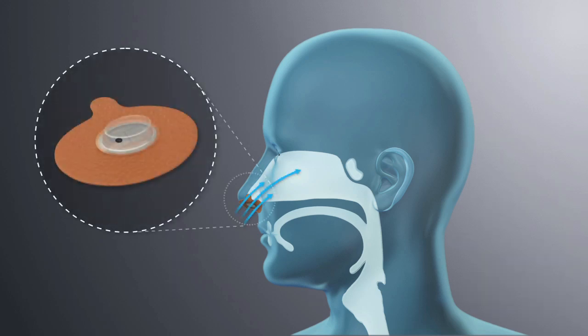During inspiration, the microvalve opens, allowing for nearly unobstructed airflow. Then, during expiration, the microvalve closes, partially restricting airflow to create EPAP and maintain pressure in the airway through the start of the next inspiration. This helps maintain airway patency during sleep.